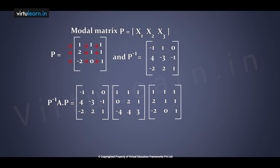The result D equals 1 0 0 / 0 2 0 / 0 0 3. We got the diagonal matrix with principal diagonal elements 1, 2, 3, which are exactly the eigenvalues of matrix A. This confirms P inverse A P equals D.